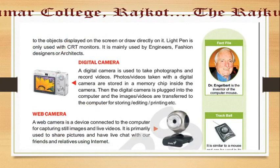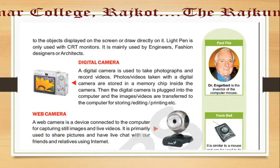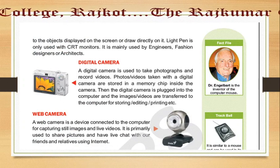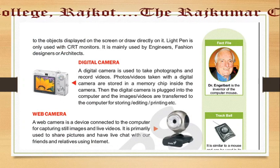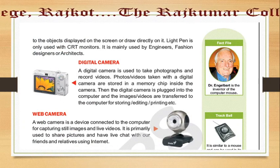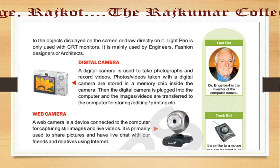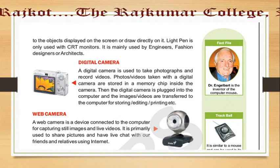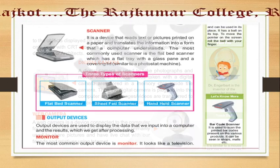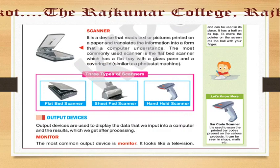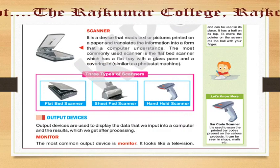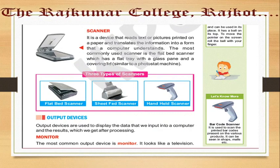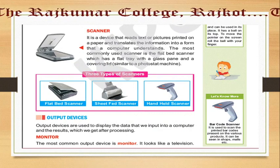Then digital camera and web camera. Then trackball — you can see it in a small box here. Then scanner, which comes in three types: flatbed scanner, sheet scanner, and handheld scanner.